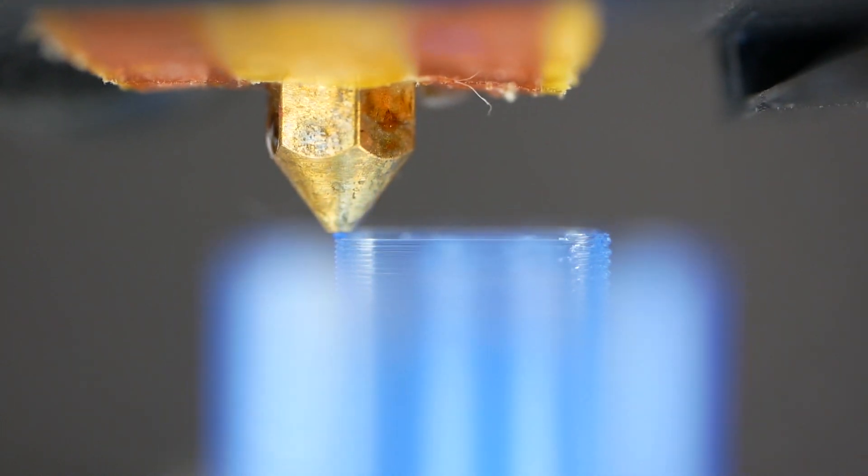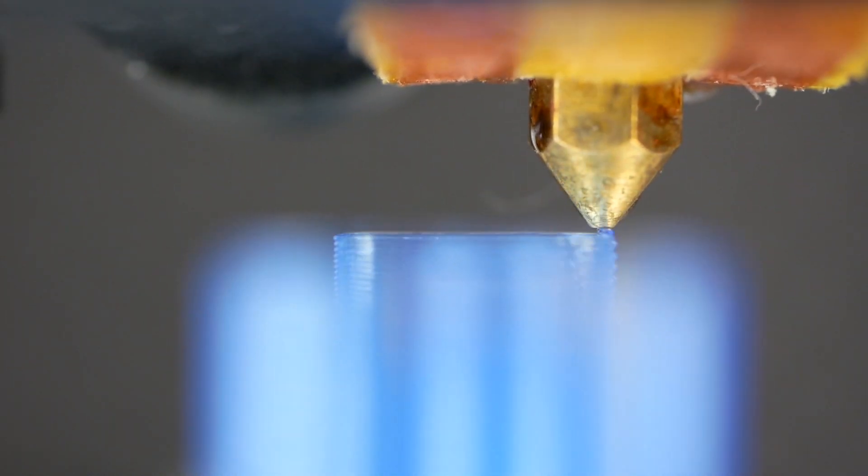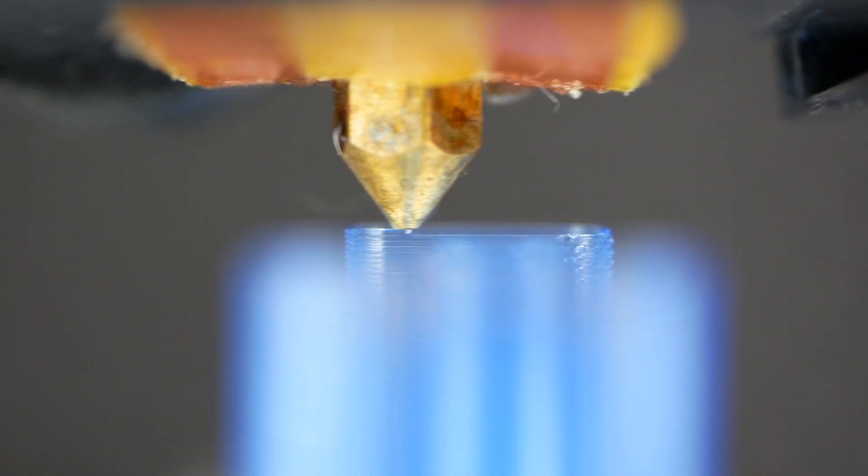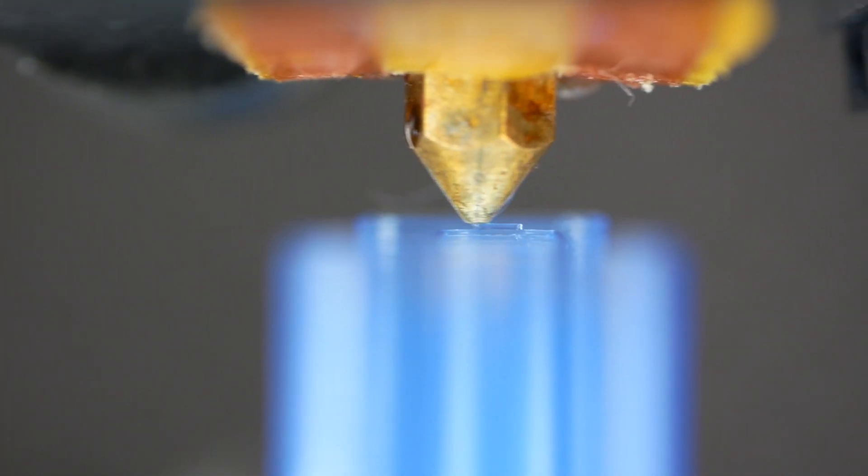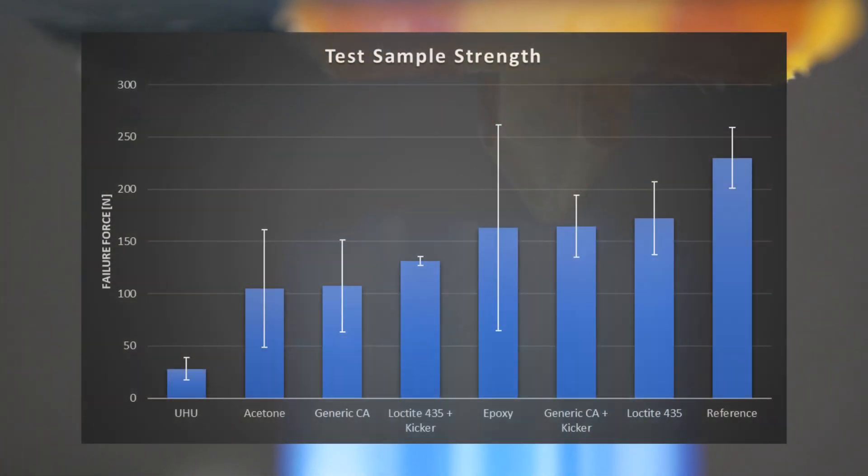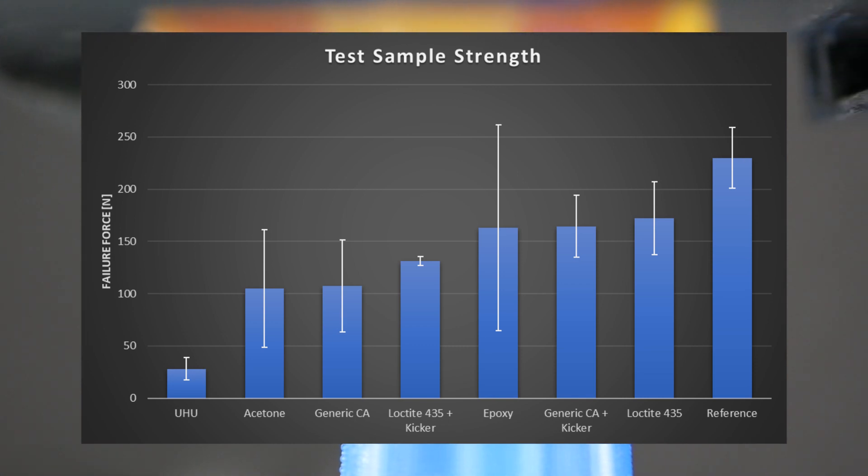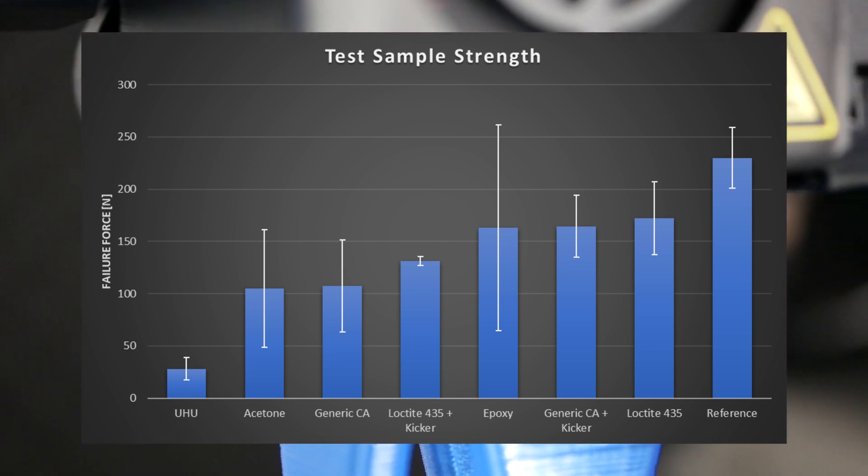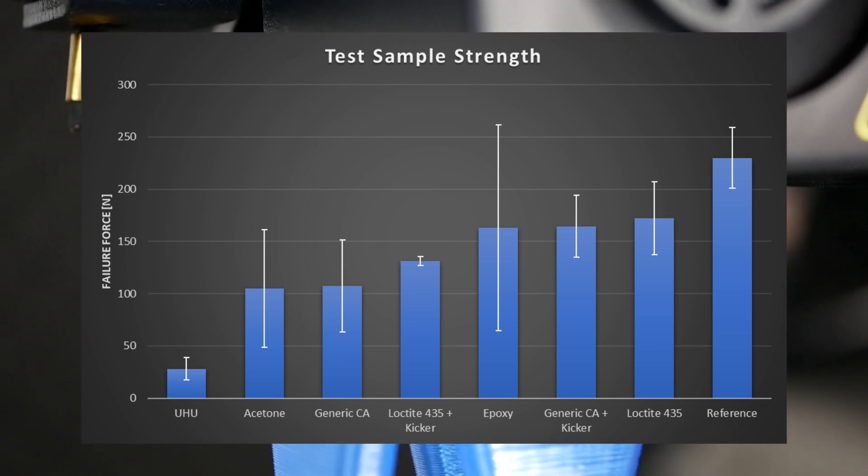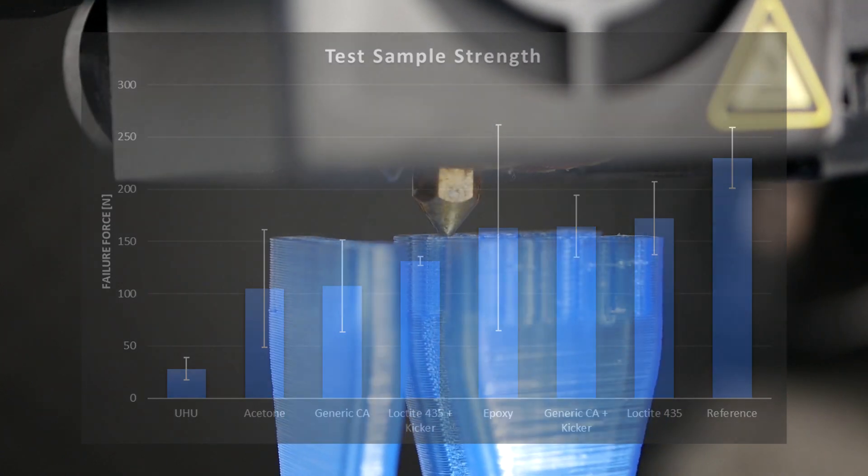The Loctite 435 performed well together with the generic CA glue where accelerator was used. The Loctite didn't seem to like my generic accelerator because with this one it performed worse. Maybe using the Loctite accelerator would have resulted in better results. The reference samples performed the best but the results were not way higher in comparison to the glued ones.